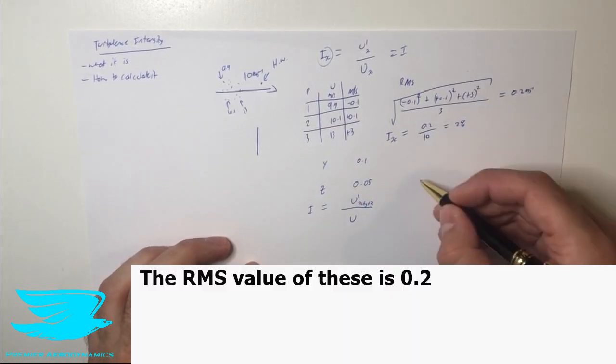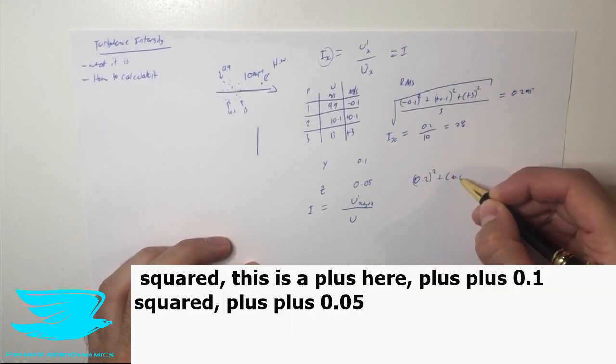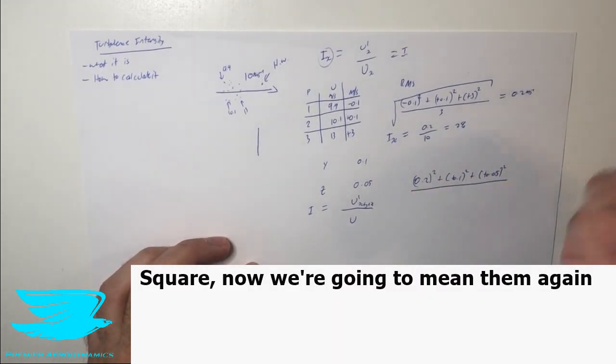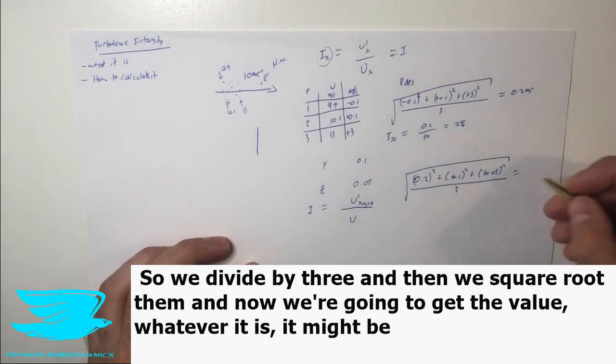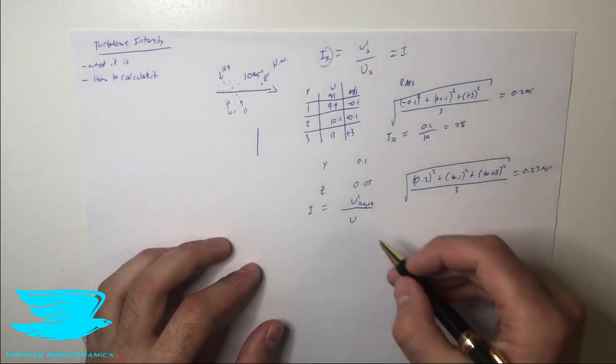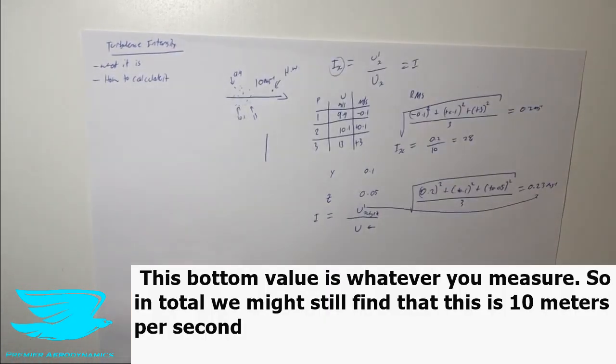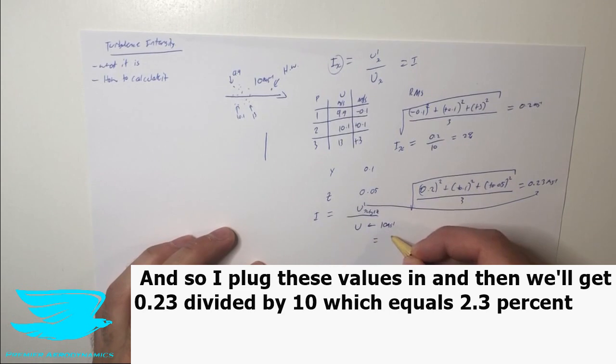So the RMS value of these is 0.2 squared, plus 0.1 squared, plus 0.05 squared. Now we're going to mean them, again there are three values, so we divide it by three, and then we square root them. And now we're going to get the value, which might be 0.23 meters per second now. And so we know now that this top value is this, this bottom value is whatever we measure. So in total, we might still find that this is 10 meters per second. And so we plug these values in, and then we'll get 0.23 divided by 10, which equals 2.3 percent.